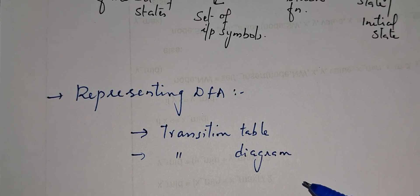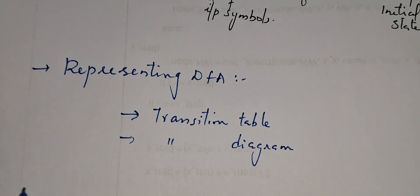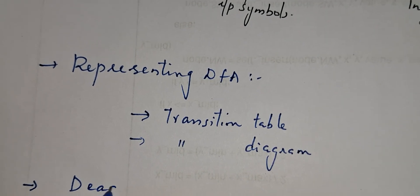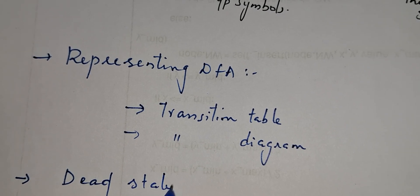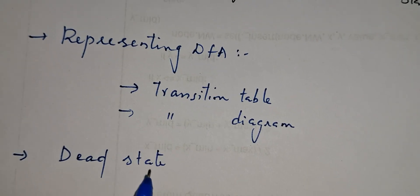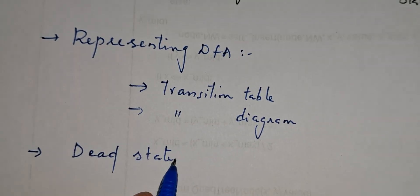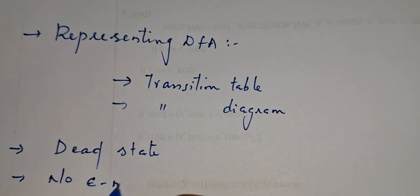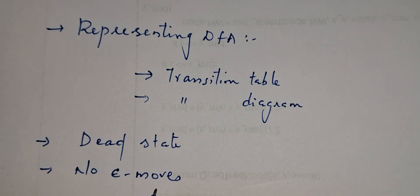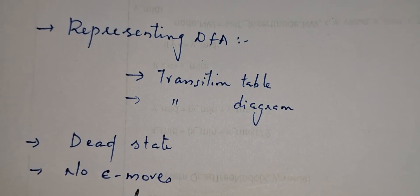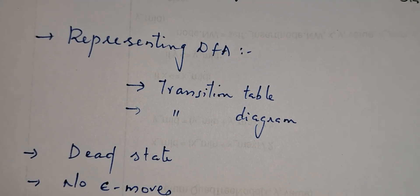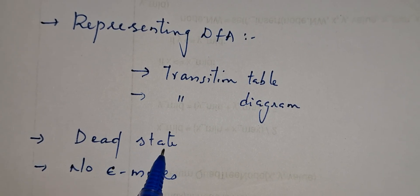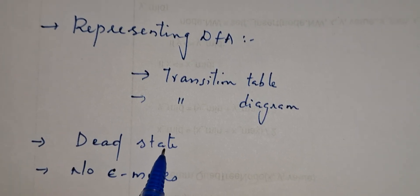In case of DFA, there will be a particular state known as a dead state — you will understand what a dead state is when seeing an example. Also, there will be no empty moves, no epsilon moves in case of DFA. You will study what epsilon moves are in case of NFA, but just keep in mind there are no epsilon moves in DFA, and there will be a dead state in DFA.